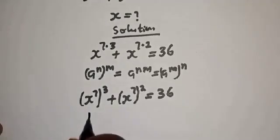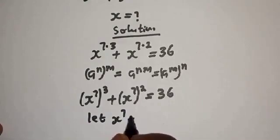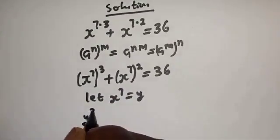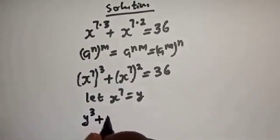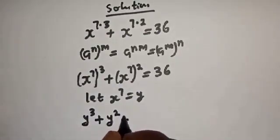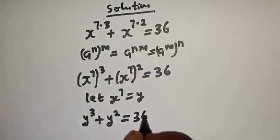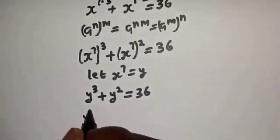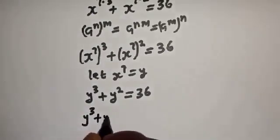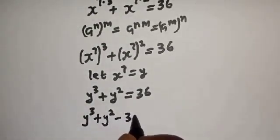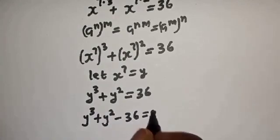Let s to power 7 be equal to y. Then y raised to power 3 plus y squared is equal to 36. Bringing everything to one side: y raised to power 3 plus y squared minus 36 is equal to zero.